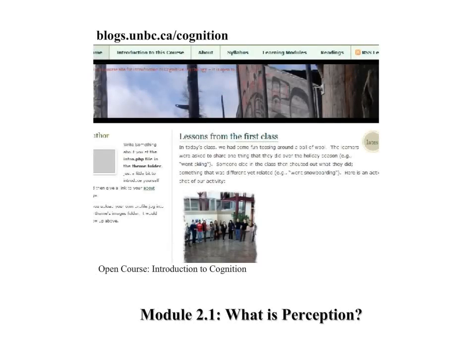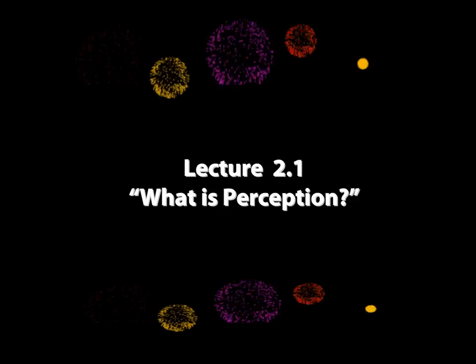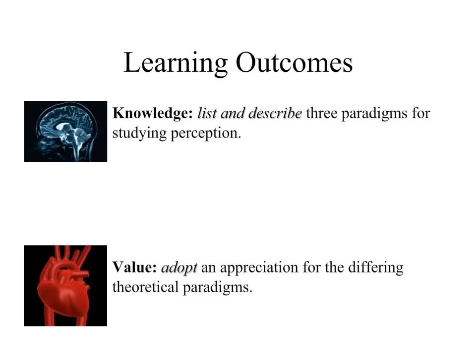Welcome once again to Cognition. You can find this course at blogs.umbc.ca/cognition. Come and join us. For Module 2.1, 'What is Perception?', we're going to focus on two learning outcomes: a knowledge-based outcome and a value-based outcome. The knowledge-based outcome is to list and describe the three paradigms for studying perception. For the value outcome, we'd like for you to adopt an appreciation for the differing theoretical paradigms used to approach perception.